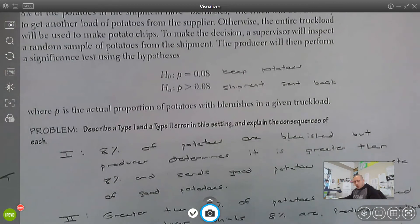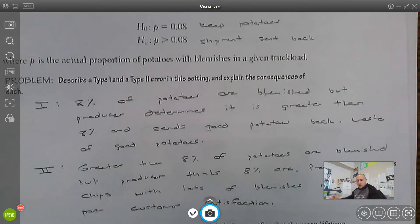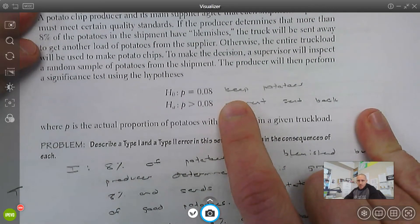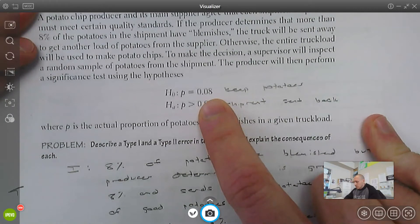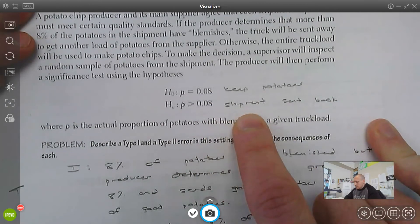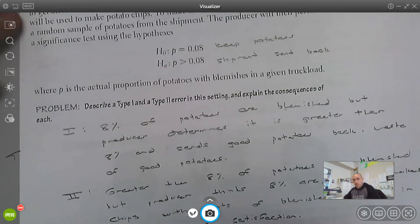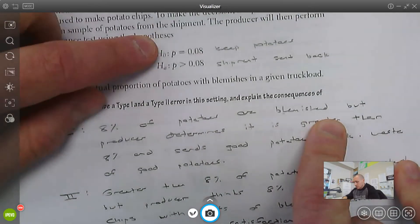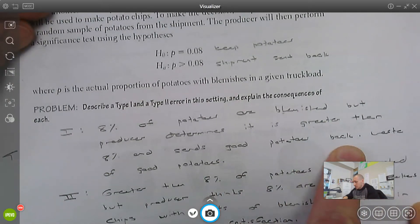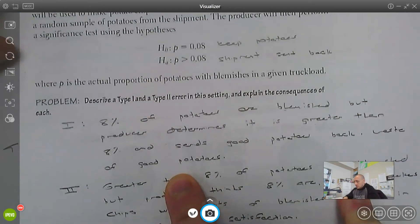Let's take a look at this top question. You'll notice I've written the Type 1 and Type 2 errors slightly differently here than the structure I showed you. I just did that to show you different ways, and I write it differently sometimes myself. So one thing I'd like to do here is put in words what this means. If the true proportion of blemished potatoes is 8%, then they're going to keep the potatoes, or less than 8%. And if that's more than 8%, then they're going to send the shipment back. Type 1 error, we reject the null but the null is true. So 8% of the potatoes are blemished, that's true, but we determine it's actually greater percent. Consequence, we send back good potatoes and we waste the time and energy of another truck having to drive back out with good potatoes.